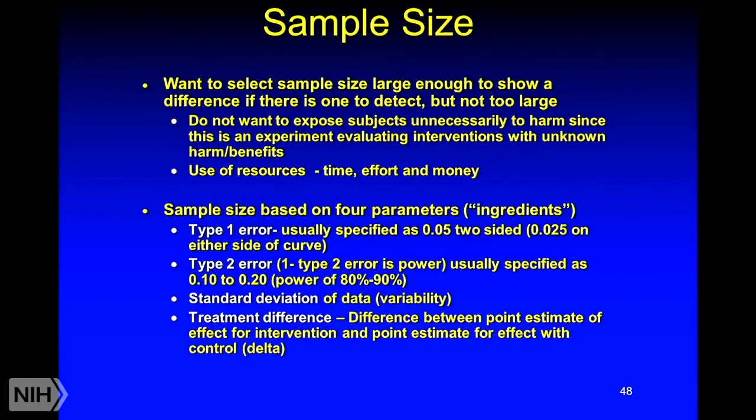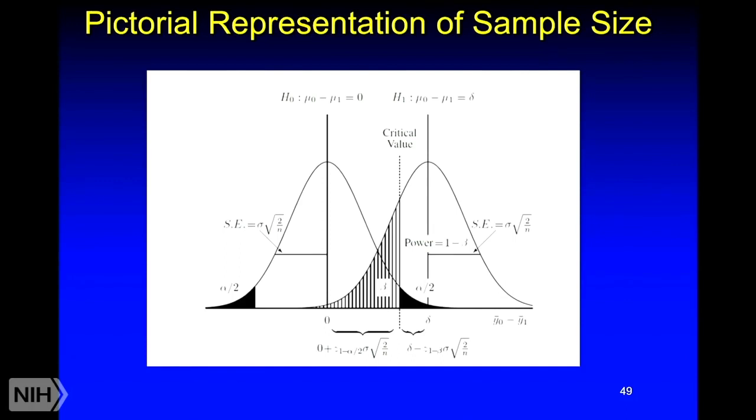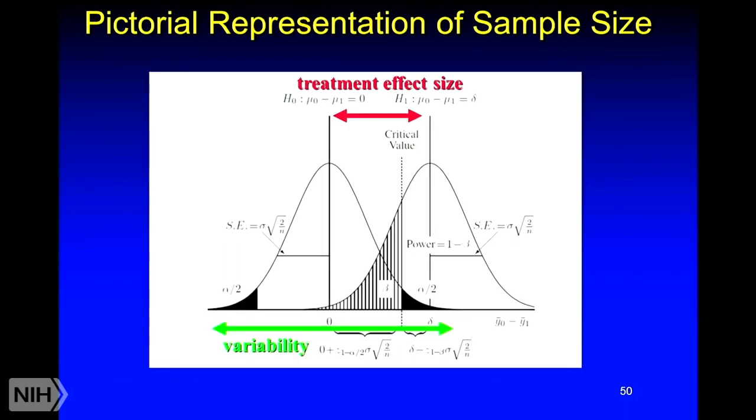The other two components of sample size are the variability in the data, which is called standard deviation, and finally, the treatment difference, the difference between the test group and the control group. The bigger that difference is, the less number of people you need to actually show that. That's sometimes also called the effect size or it can be called the delta as well. Variability in the data is the width of this curve. And the treatment effect size is the difference between the means of the two curves. By making these curves further apart and increasing the effect size, you can have a smaller sample size. By making the base of this narrower, by decreasing variability, you can have a smaller sample size.